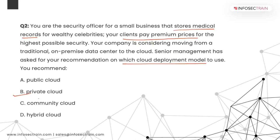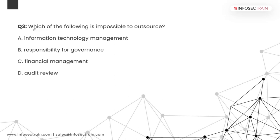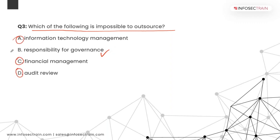Question 3: Which of the following is impossible to outsource? The answer is governance. Every organization is responsible for their own governance. Organizations can and often do outsource other business functions listed in the other answers, but responsibility for governance always lies with the organization itself.